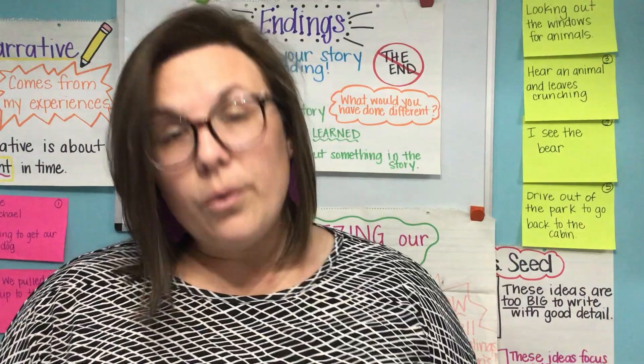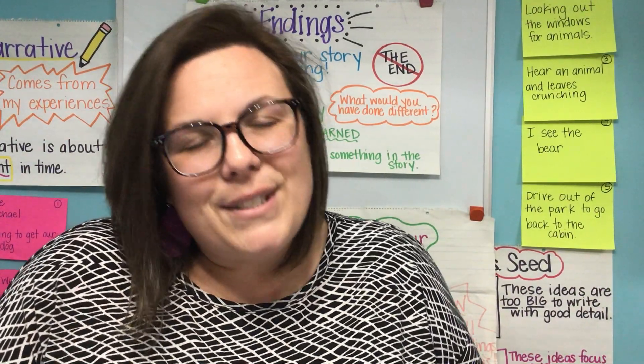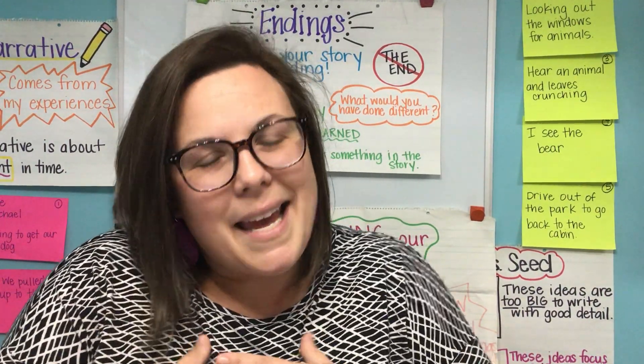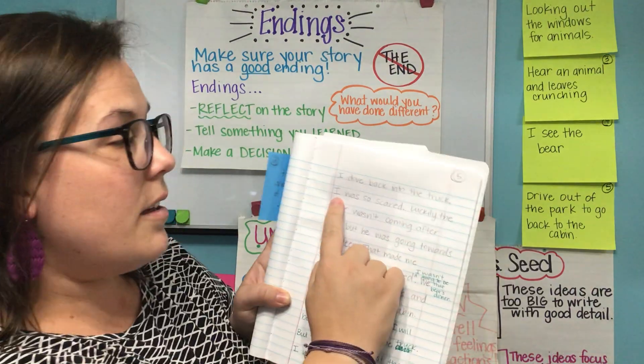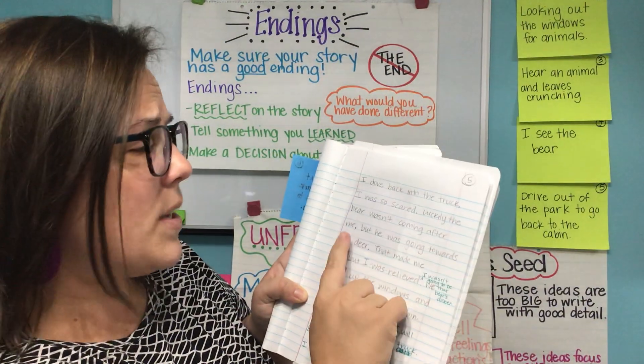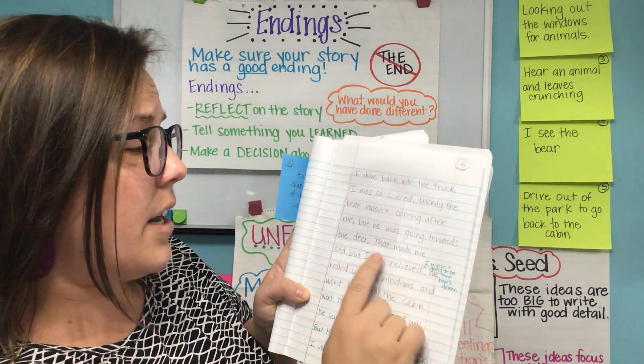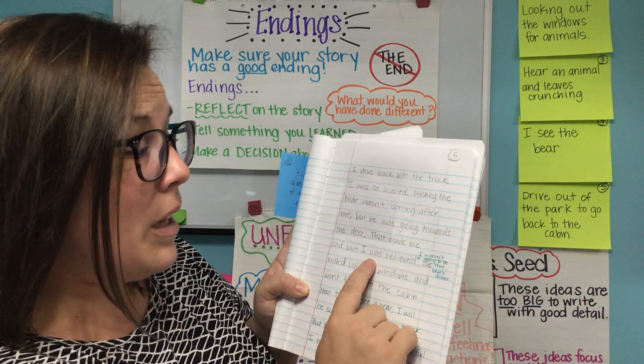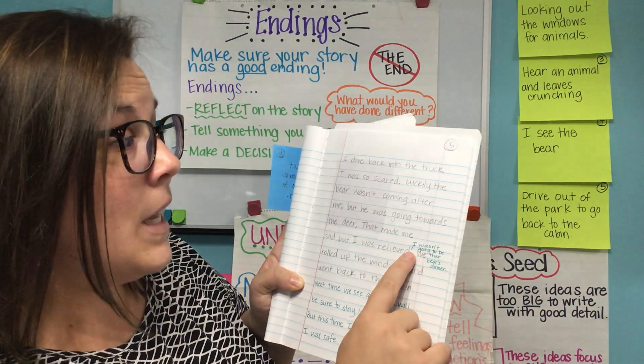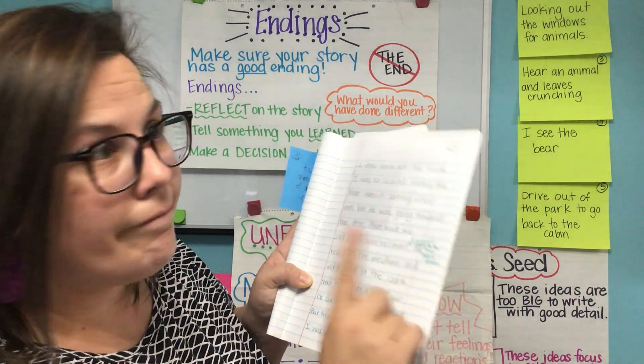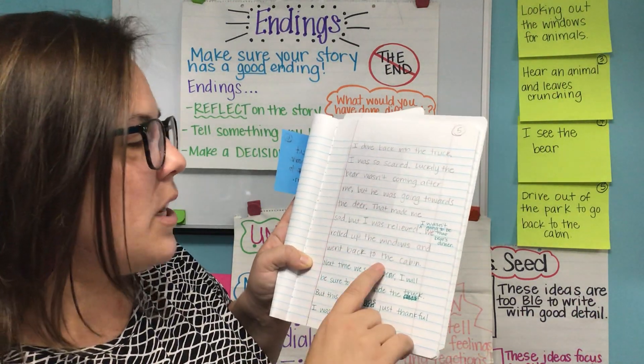I did something similar with mine. This is a story about me almost getting eaten by a bear. I got out of the truck and was trying to show my family where the bear was, and all of a sudden the bear came running towards me — or at least I thought it was towards me. I found out he was just going after another animal, so it wasn't really me. On page five my story says: 'I dove back into the truck. I was so scared. Luckily the bear wasn't coming after me, but he was going towards the deer. That made me sad, but I was relieved.' Then I added that I wasn't going to be that bear's dinner — which was probably a good thing. We rolled up the windows and went back to the cabin.